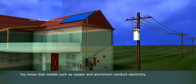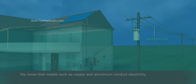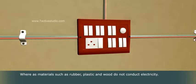You know that metals such as copper and aluminum conduct electricity, whereas materials such as rubber, plastic and wood do not conduct electricity.